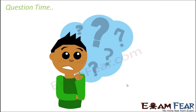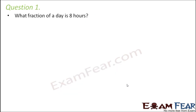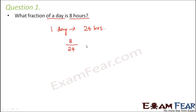Question one: What fraction of a day is eight hours? One day has 24 hours, so eight hours out of 24 hours is eight by twenty-four. Since eight threes are twenty-four, this simplifies to one by three. So one-third of the day is eight hours.